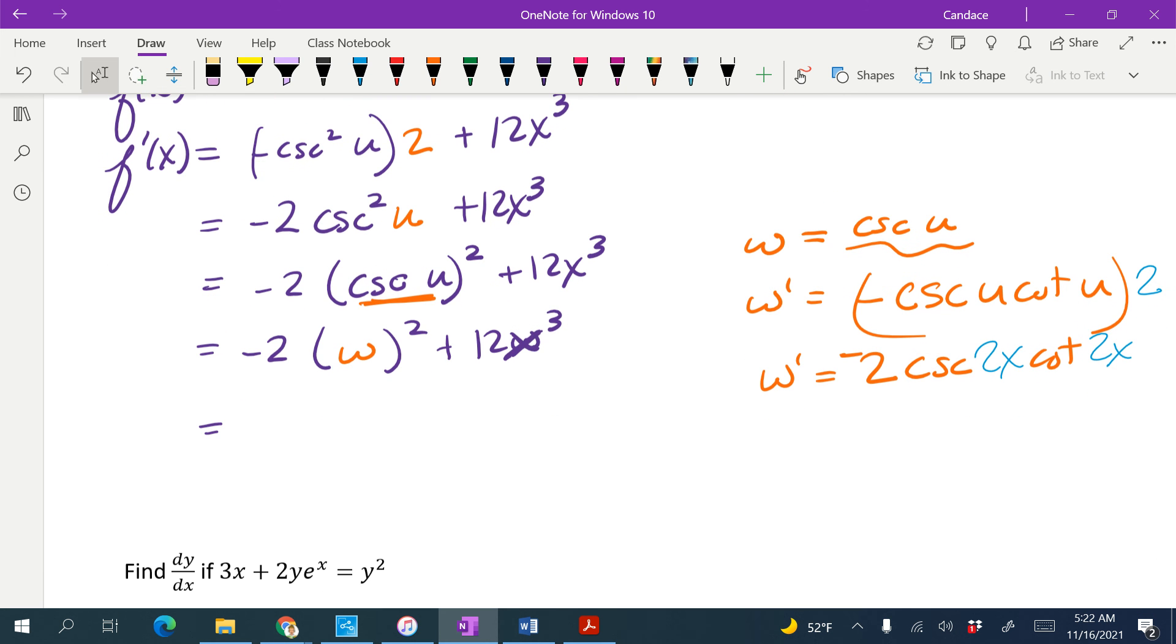Okay, so our inside function is ready. Now let's go back and do the other part of the chain here. So we've got the derivative of the inside function, which is negative 2 cosecant of 2x, cotangent of 2x, and then plus the derivative of 12x cubed would be 36x squared.